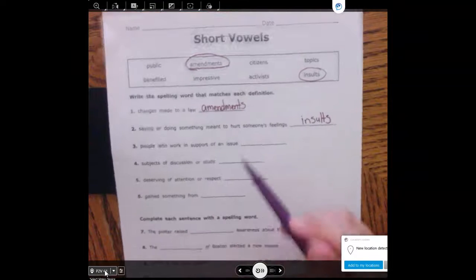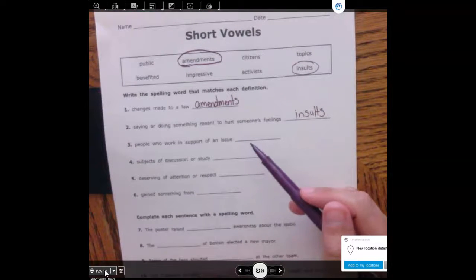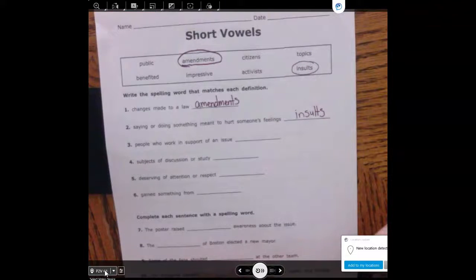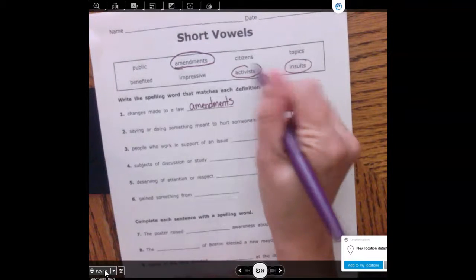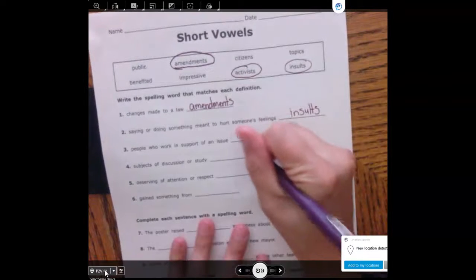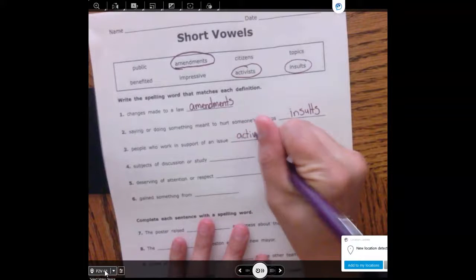People who work in support of an issue. So if you go out with signs and you're protesting something, those people are also called activists. They're actively fighting for what they believe in.